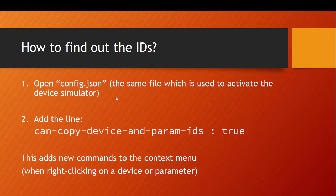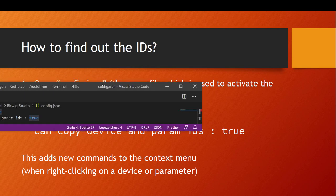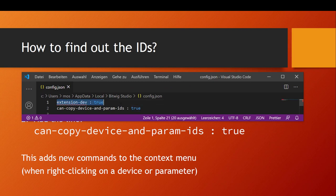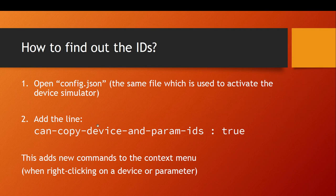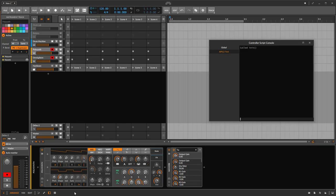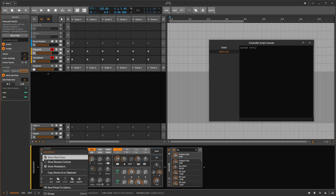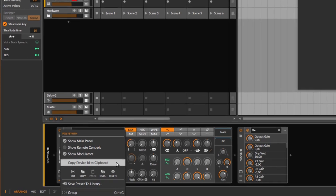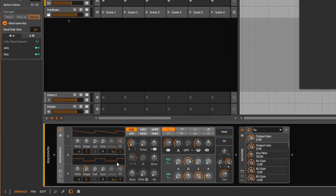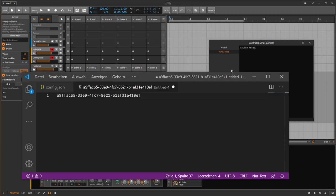There is a config JSON file — the same file used to activate the device simulator. Look at the hardware API tutorial to understand that. You can add the line 'copy device and param id' to it. Once added, if you start or restart Bitwig and right-click on a device — for example the Polysynth — you'll see a new entry: 'Copy device ID to clipboard'. Paste it and you get the device's ID.